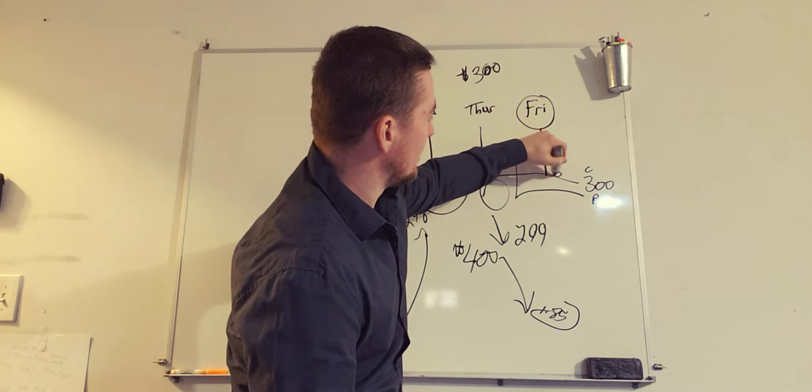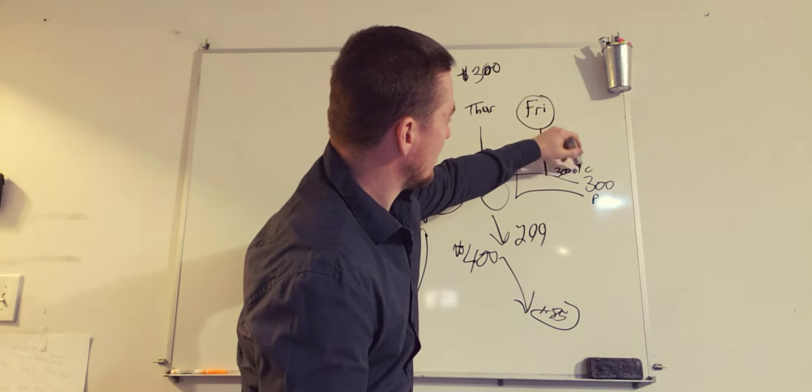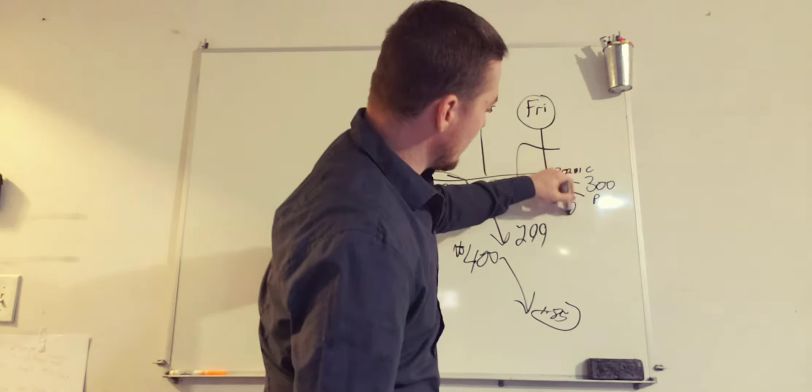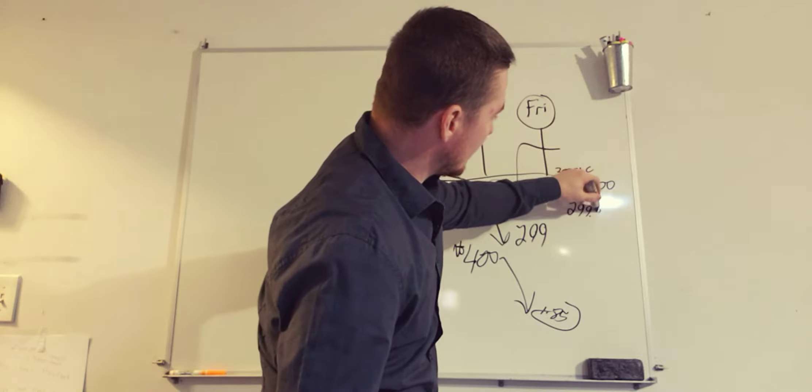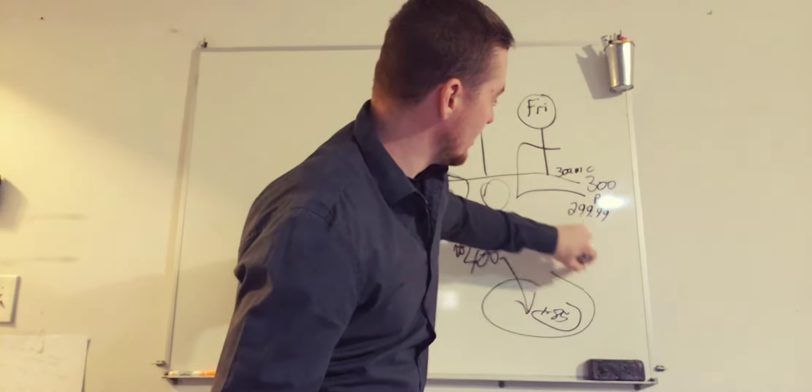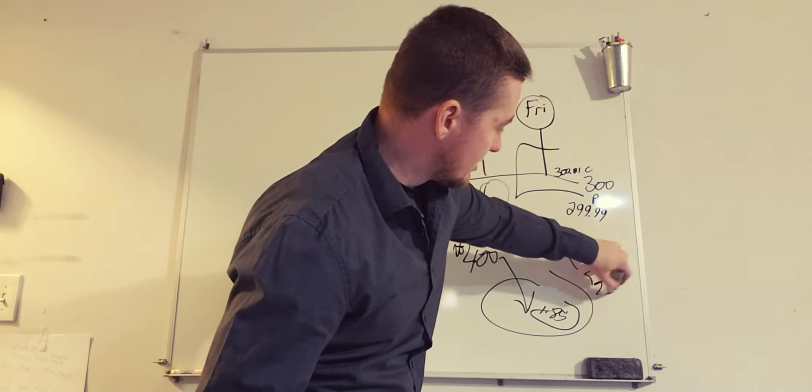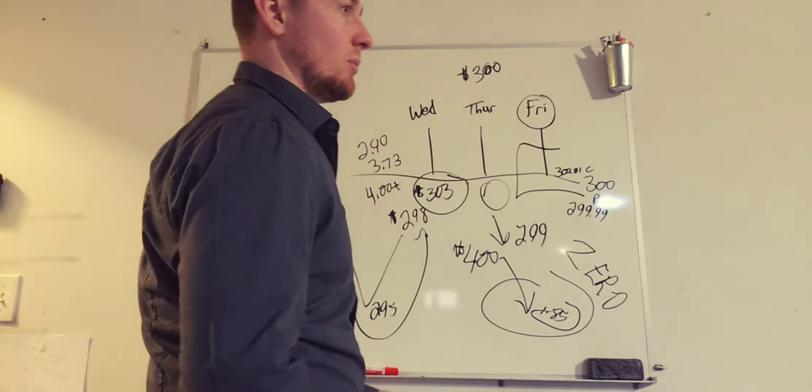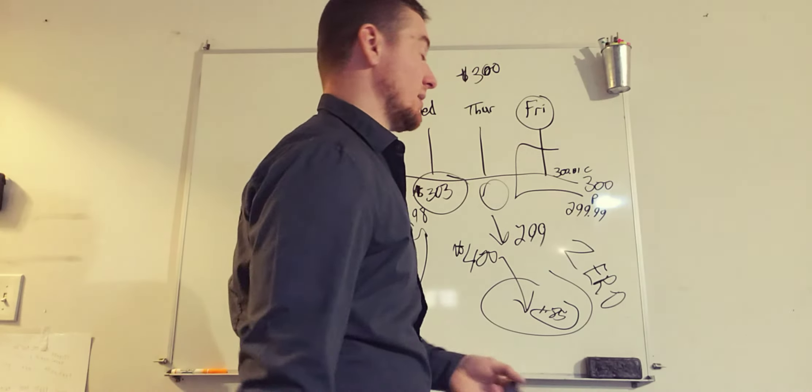If this is at 300 and a penny, he expires in the money. He's good. If it expires at 299.99, this entire position will be what? Zero. Why? Because it expired out of the money.